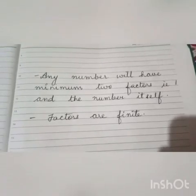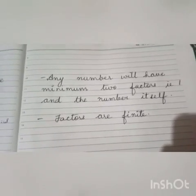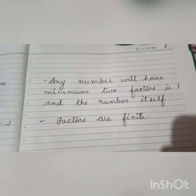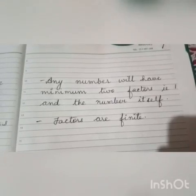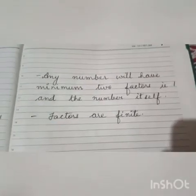The third feature is, any number will have minimum 2 factors, that is 1 and the number itself. For example, 23 ones are 23. So 1 and 23 are 2 factors of 23. That means at least 2 factors every number will have.